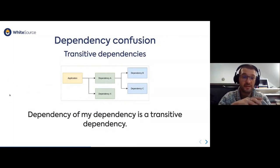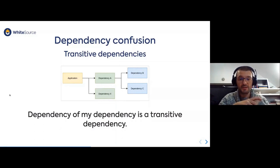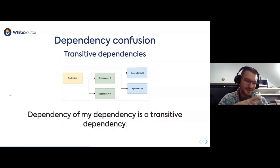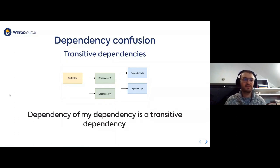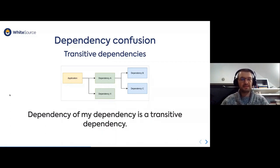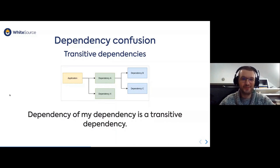A next quite interesting factor is dependency confusion, which is directly related to transitive dependencies. Dependencies of your dependencies are transitive dependencies, and dependencies of those are also transitive dependencies, and so on. When you provide a single dependency in your codebase, it can build up quite a big tree — a single package may depend on 25 packages, and those 25 may depend on other packages, possibly on different versions of the same packages. Resolving all of that is not an easy job.